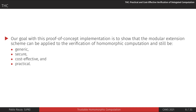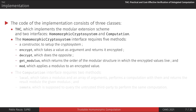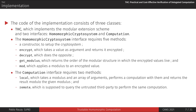The THC implementation consists of three classes. The main one implements the modular extension scheme, and the two others are interfaces used for homomorphic cryptosystems and computation implementations to be used with THC. The first interface requires cryptosystems to provide encrypt and decrypt functions, a method to get the order of the modular structure in which encrypted values live, and a method to apply a modulus to encrypted values — useful because not all cryptosystem encrypted values are scalar; for example, ElGamal values are pairs. The second interface requires two methods: one to perform the computation locally in the small field, and another to delegate the computation to the untrusted third party and retrieve the result.